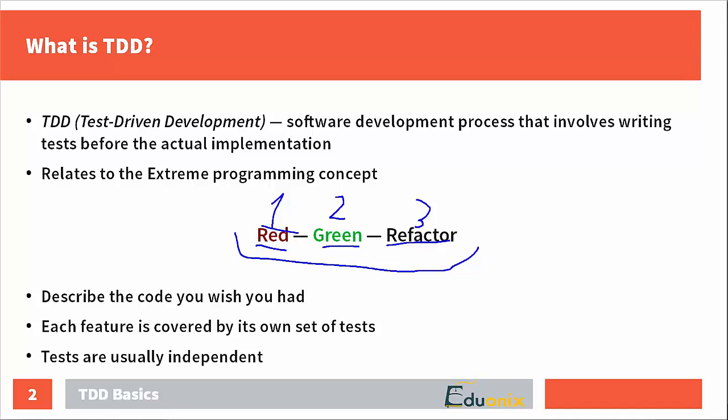Some developers say that writing tests means describing the code you wish you had — first you describe what you'd like to build, then you write it. I understand this concept may sound strange at first, and it won't fit every circumstance, especially when you have very little time and need to quickly implement a feature. In that case you can skip testing, but overall writing tests is a really good practice.